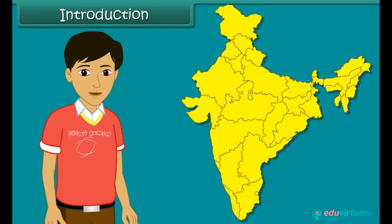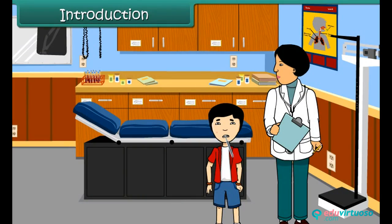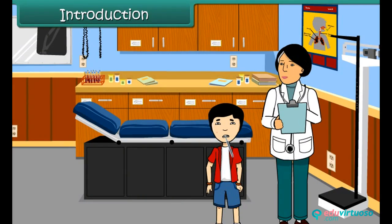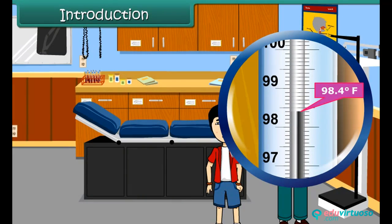Have you seen how news channels report the maximum and minimum temperatures of a particular place on a particular day? 34.3 degrees Celsius, 21.2 degrees Celsius. When you go for your regular check-up, does your doctor check your body temperature and report it as 98.4 degrees Fahrenheit?